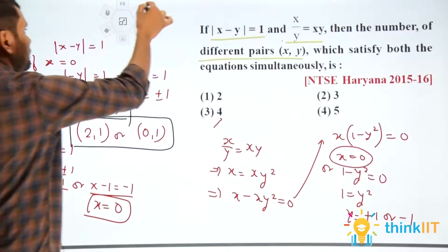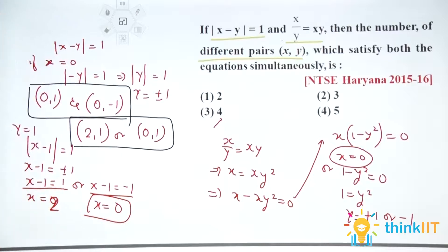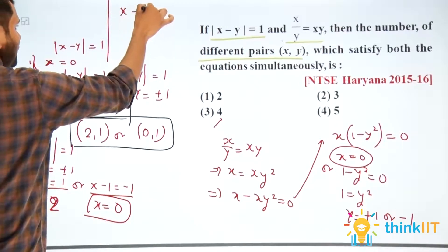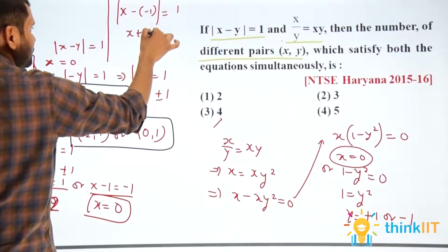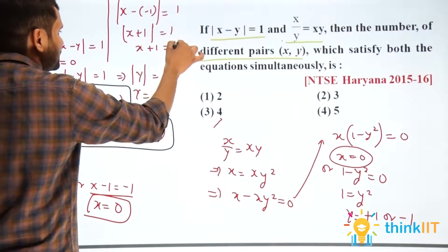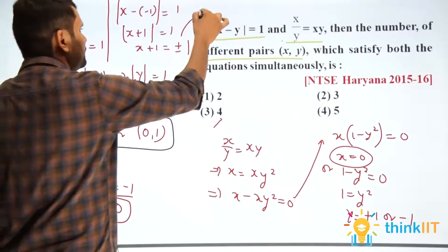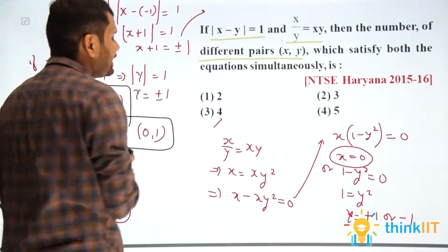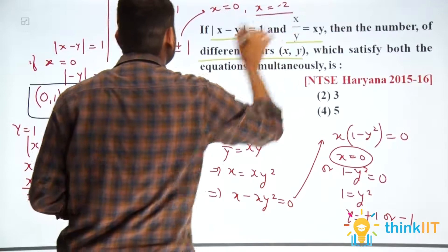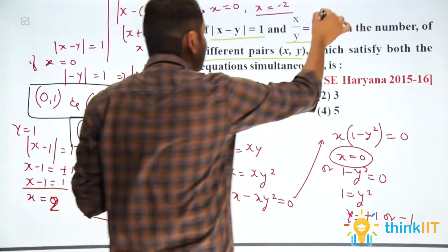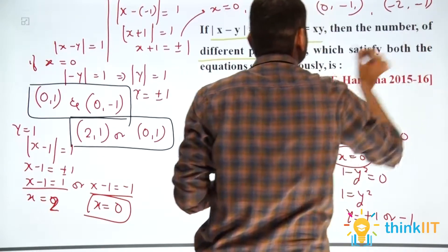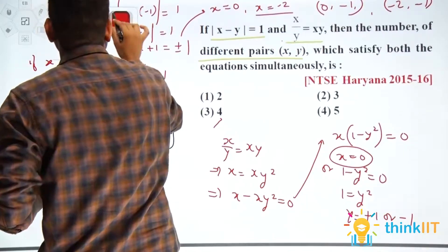Now let's solve for y equal to minus 1. If y equals minus 1, the equation becomes mod of x minus (minus 1) equals 1, that is mod of x plus 1 equals 1. So x plus 1 equals plus or minus 1. Solving: x plus 1 equals plus 1 gives x equals 0, and x plus 1 equals minus 1 gives x equals minus 2. So from y equals minus 1 we get two solutions: (0, −1) and (−2, −1).